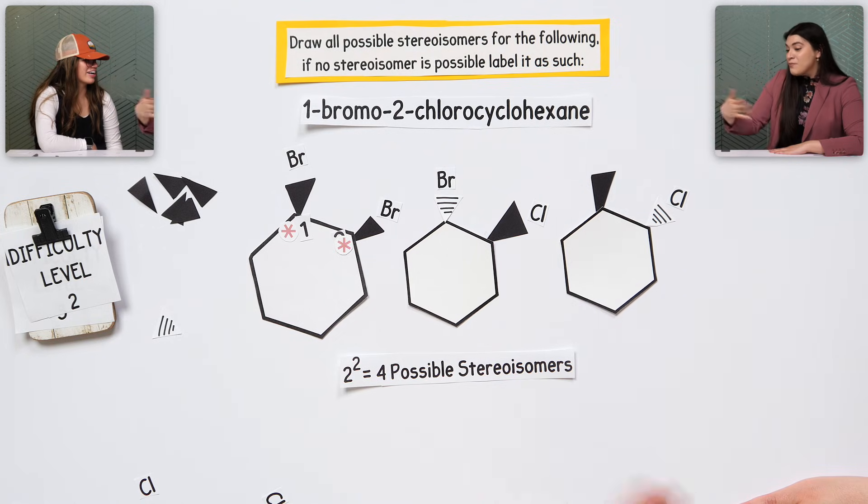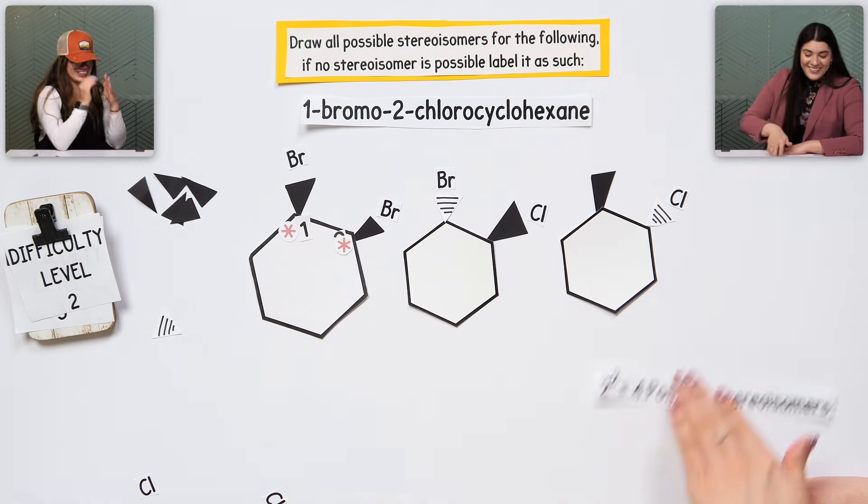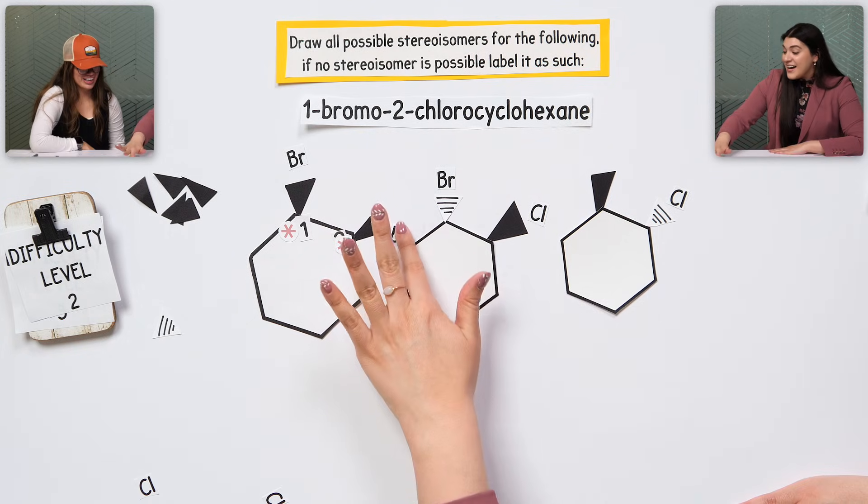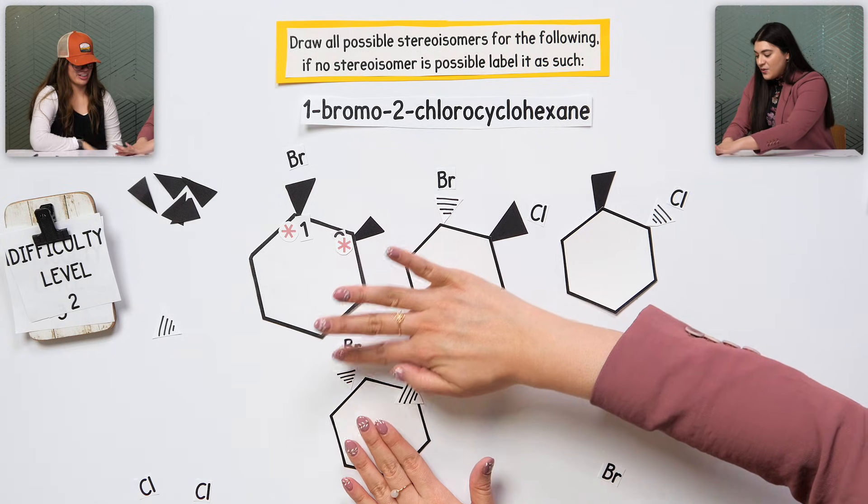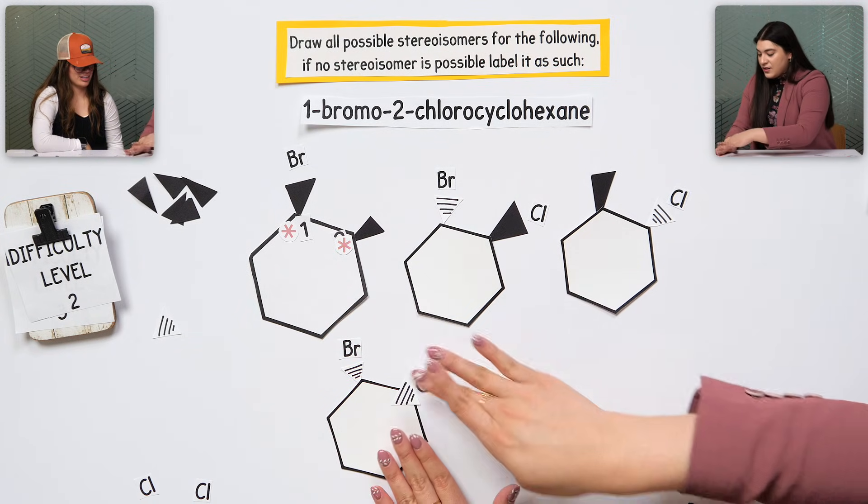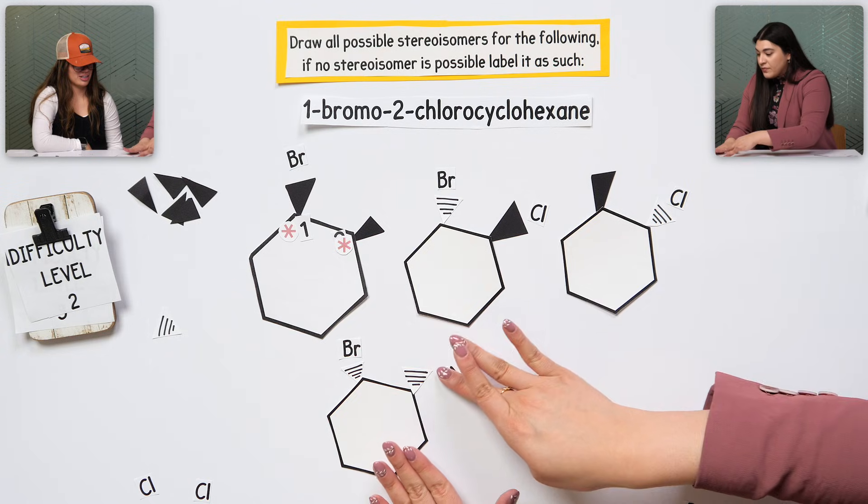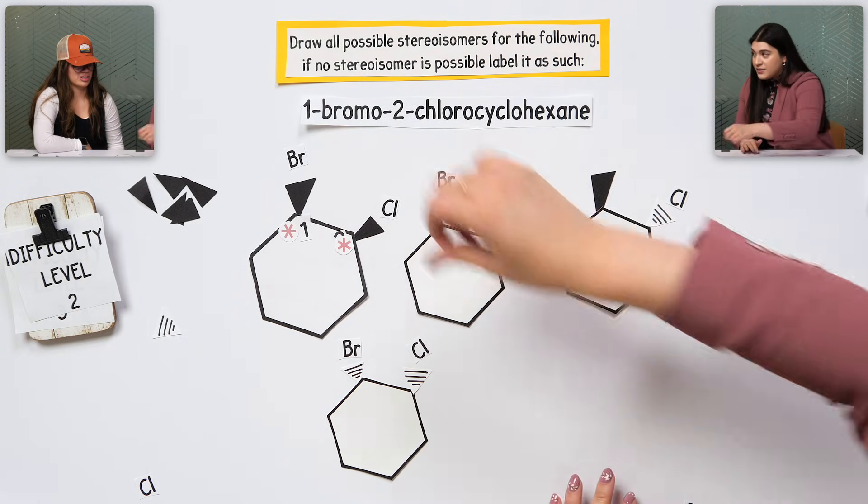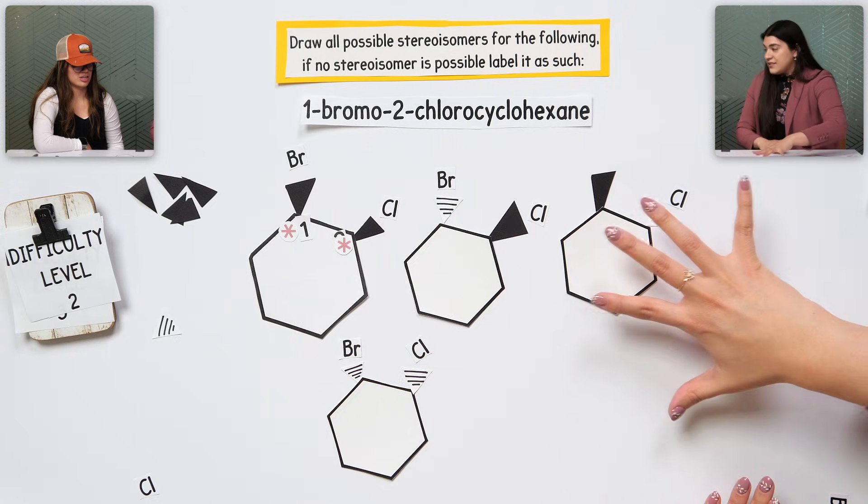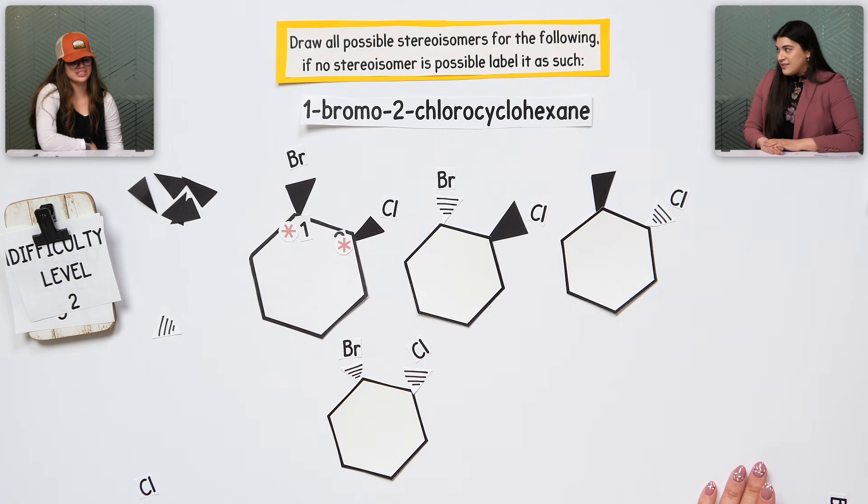So, I can have two different ones here where this is wedged and wedged and this is dashed and dashed. That's why there is a possibility of four stereoisomers here. So if it was both bromines, then it would only be two? So, these are exactly the same. There's an internal line of symmetry. It's a meso compound. So, there would only be three stereoisomers if that were the case.